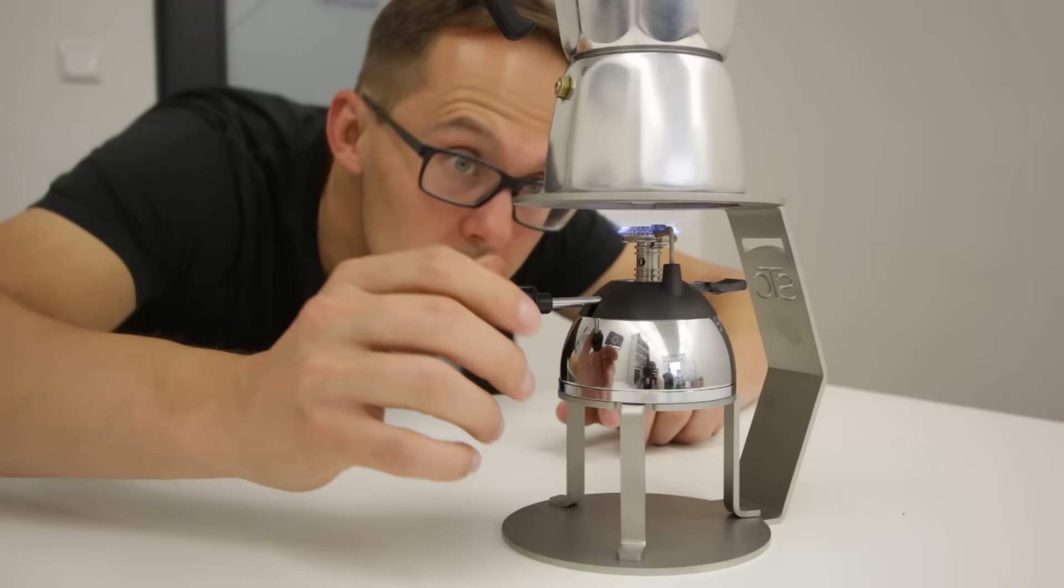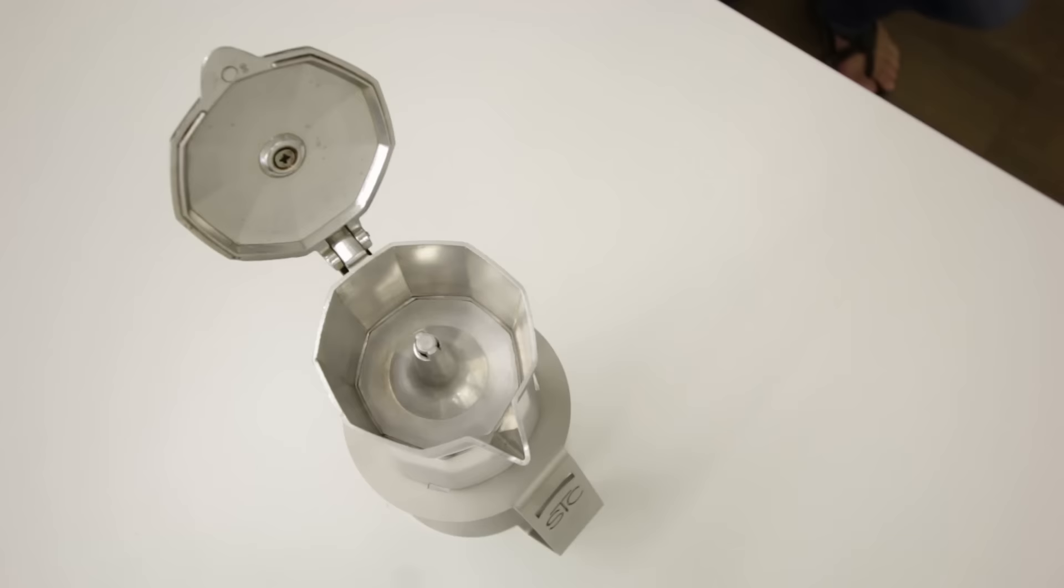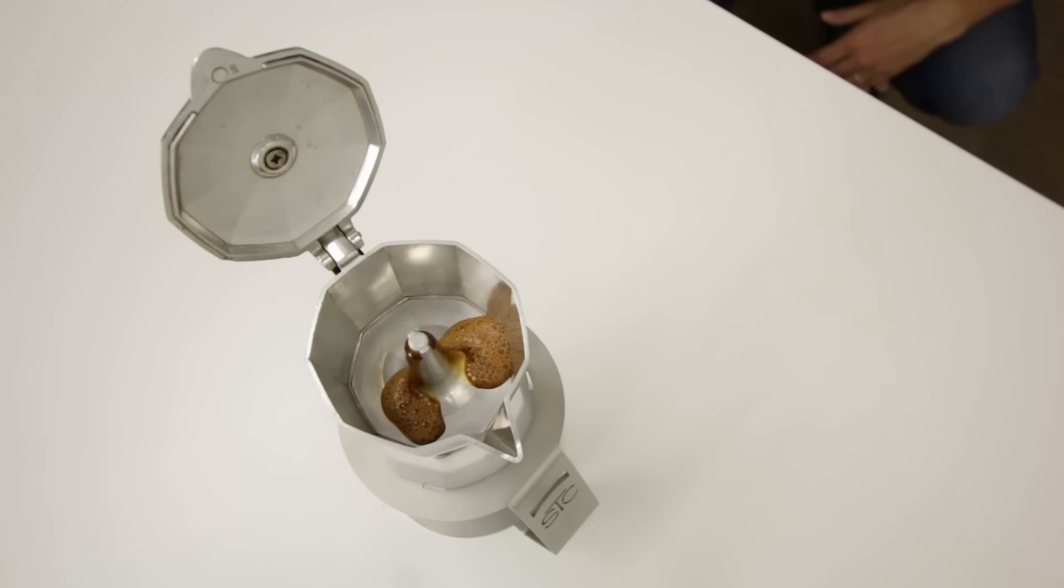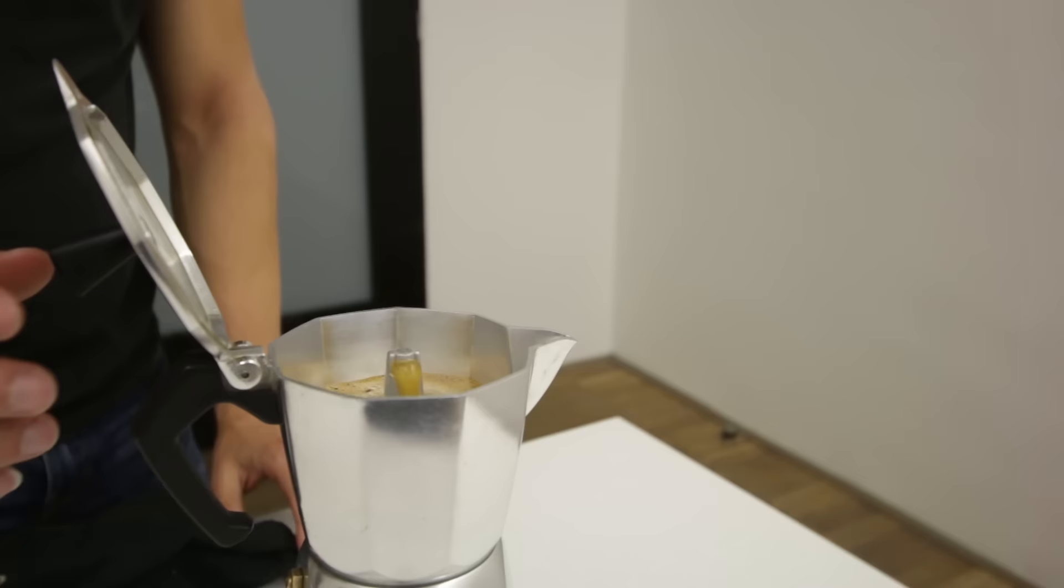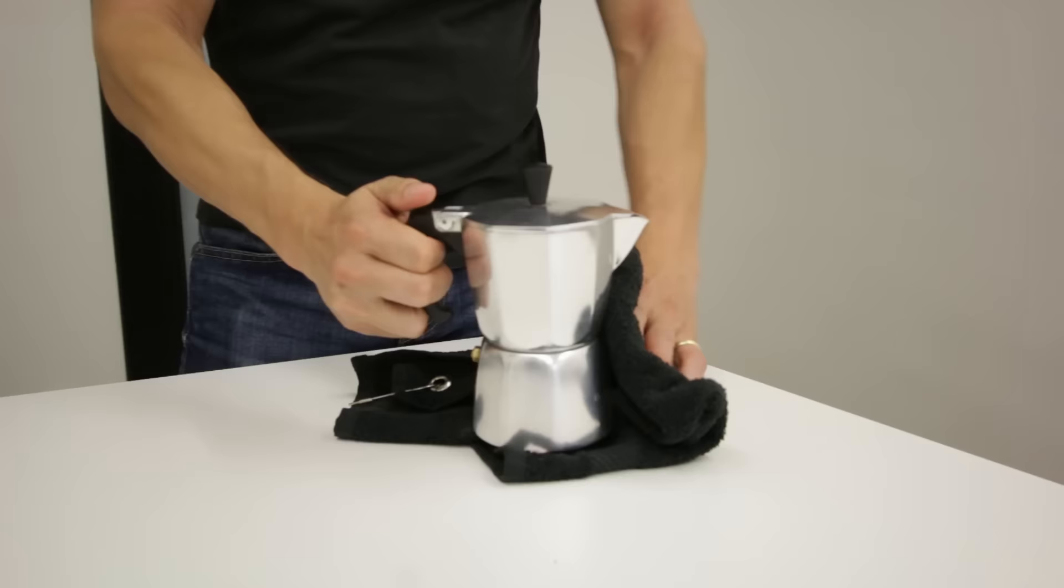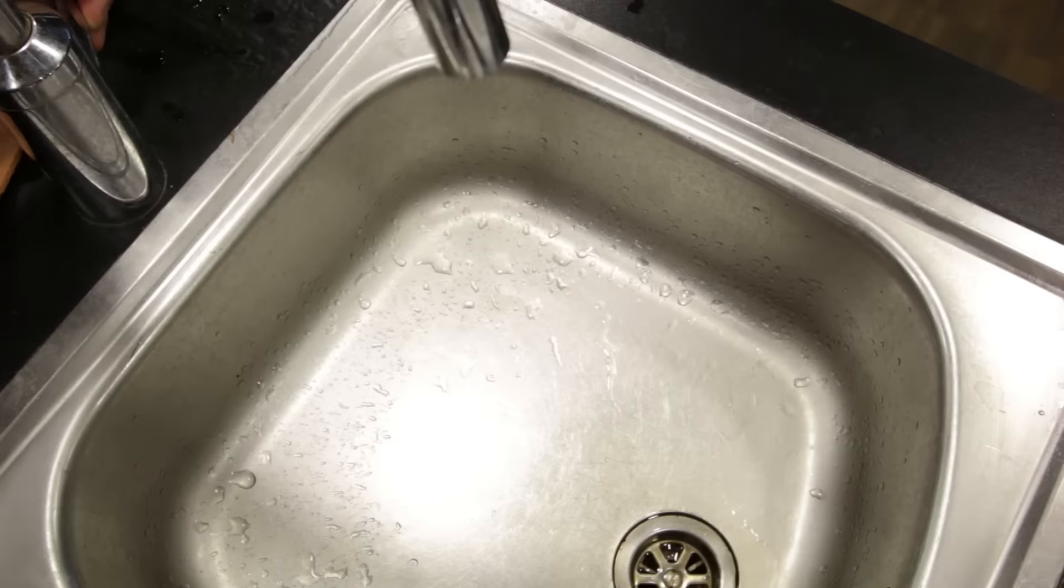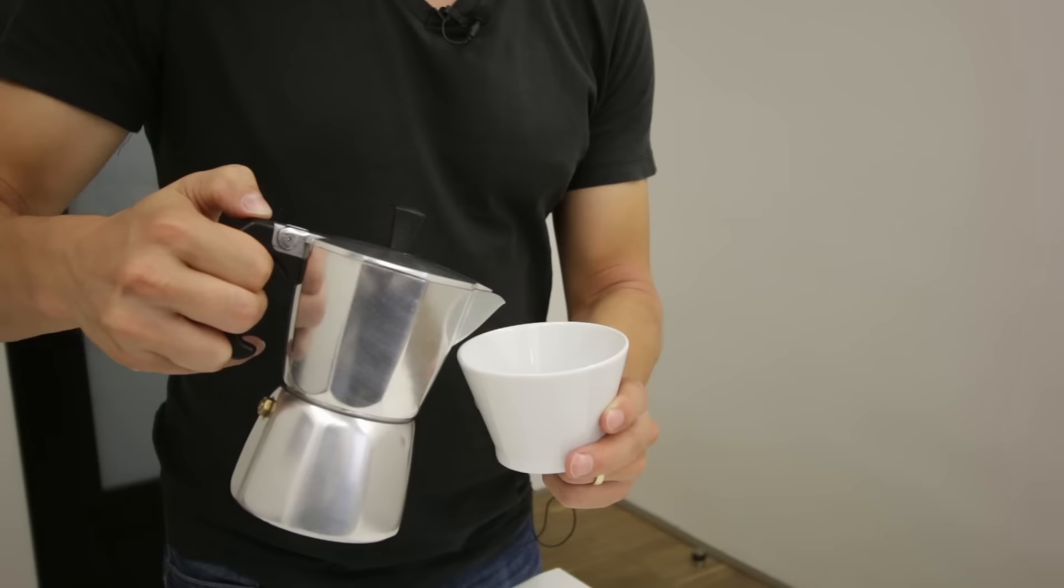Then the pressure inside the moka pot actually pushes the coffee up and you start to see how it flows into the top part. You have to observe, you have to follow it, because when you start hearing the bubbling and the noise, it's the right time to take it out of the heat and even better, cool it down with a wet towel or under running water. That way you stop the extraction and your coffee is ready straight away. Then you pour it into your favorite coffee cup and you're done. You have a great cup of coffee.